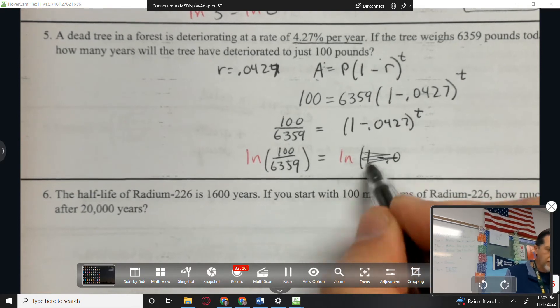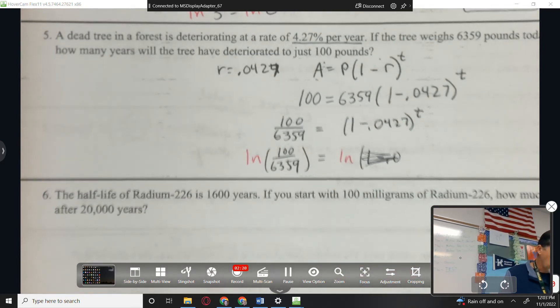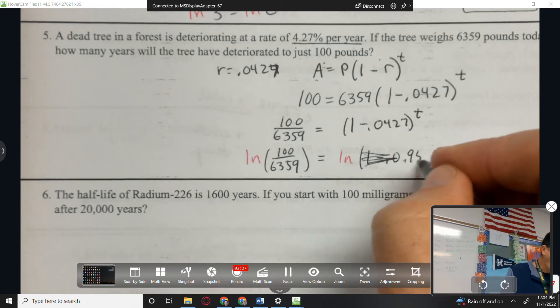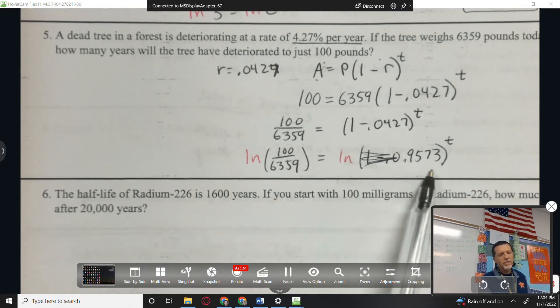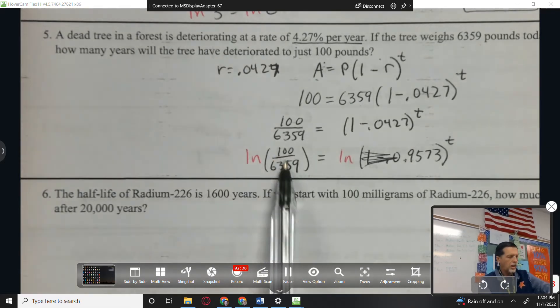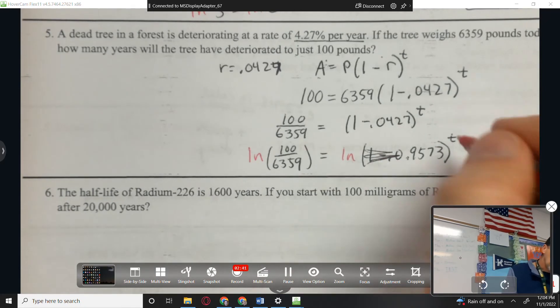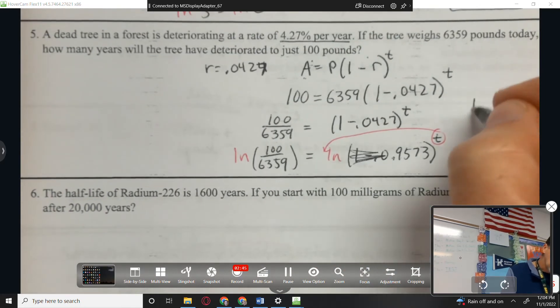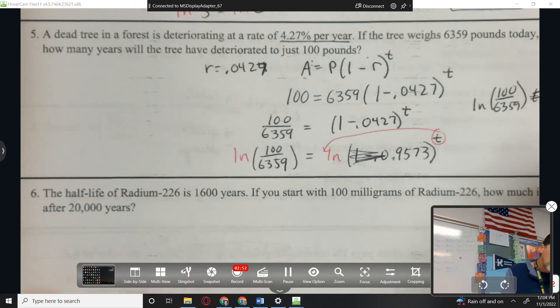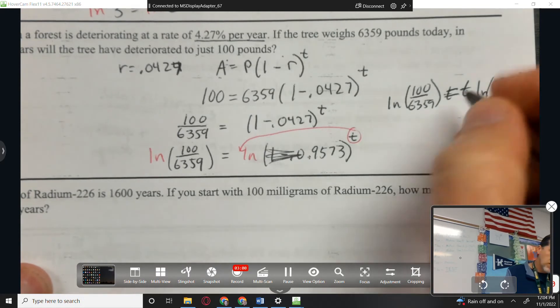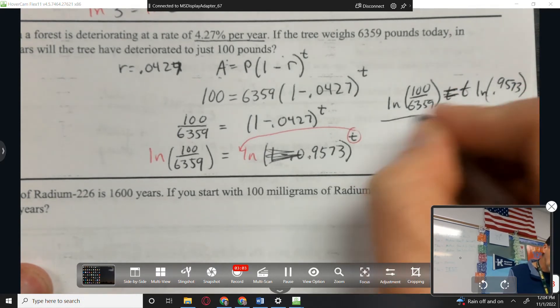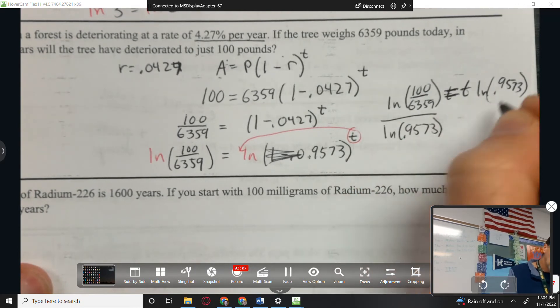So 100 over 6359 or whatever that decimal is that you've already figured out. Here's one where I probably could subtract because that's going to be an easy one. 1 minus 0.0427 is 0.9573. So this is a good problem where sometimes it's good to go to the calculator and make things easier. So the T comes out front. That was the whole point of this. So natural log of 100 over 6359 equals T natural log of 0.9573.